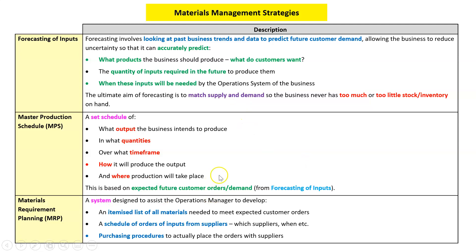Materials requirement planning is the system to help the operations manager. Now we've got our master production schedule so we know what we're going to make and when and where. We've got to work out all the materials we need, all the little bits and parts, schedule orders from suppliers, and have procedures in place to buy them. These are so difficult to explain, so if the question is open-ended I would not talk about any of these — but you might get a question specifically about them, so you do need to know them.